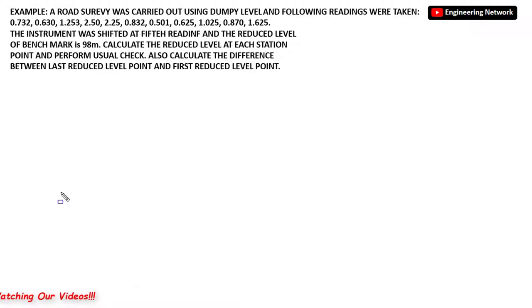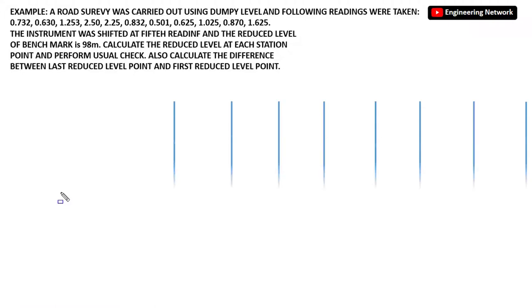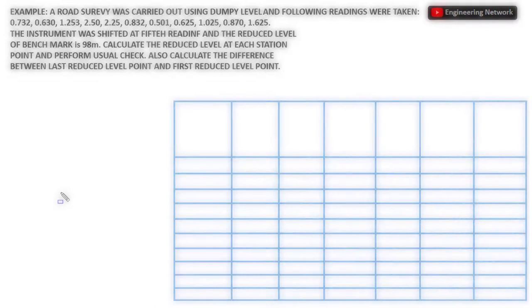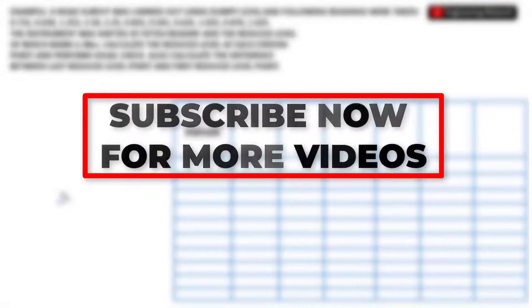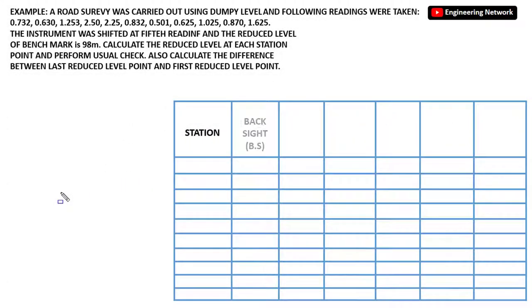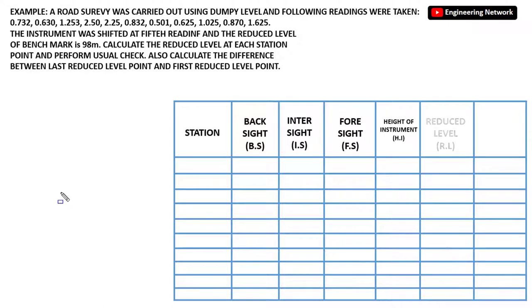This is a simple numerical problem. Now let me draw a table for the line of collimation or height of instrument method. The first column is the station, second is back sight, third is inter sight, fourth is fore sight, fifth is height of instrument or HI, sixth is reduced level or RL, and seventh is remarks.